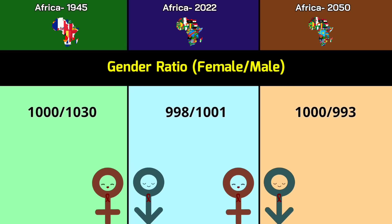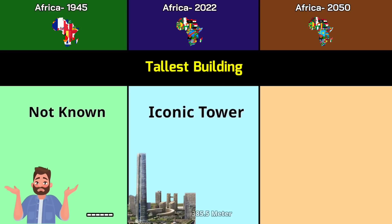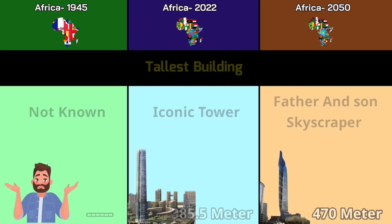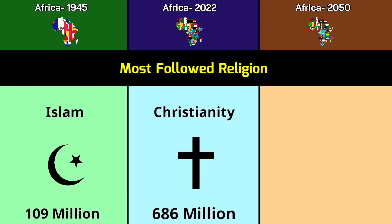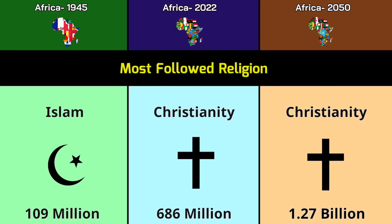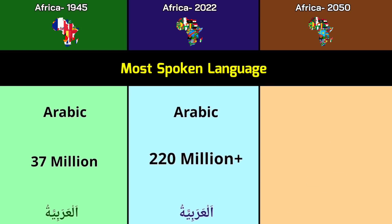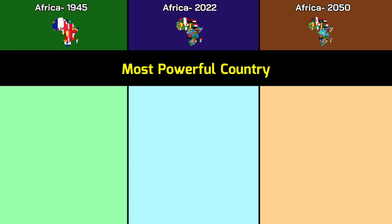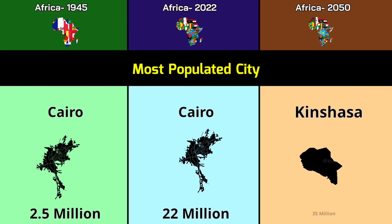Gender ratio: 1,000 per 1,030 in 1945; 998 per 1,001 in 2022; 1,000 per 993 in 2050. Tallest building: Not known in 1945; Iconic Tower at 385.5 meters in 2022; Father and Son Skyscraper at 470 meters in 2050. Most followed religion: Islam with 109 million in 1945; Christianity with 686 million in 2022; Christianity with 1.27 billion in 2050. Most spoken language: Arabic at 37 million in 1945; Arabic at 220 million in 2022; Arabic at 400 million in 2050.